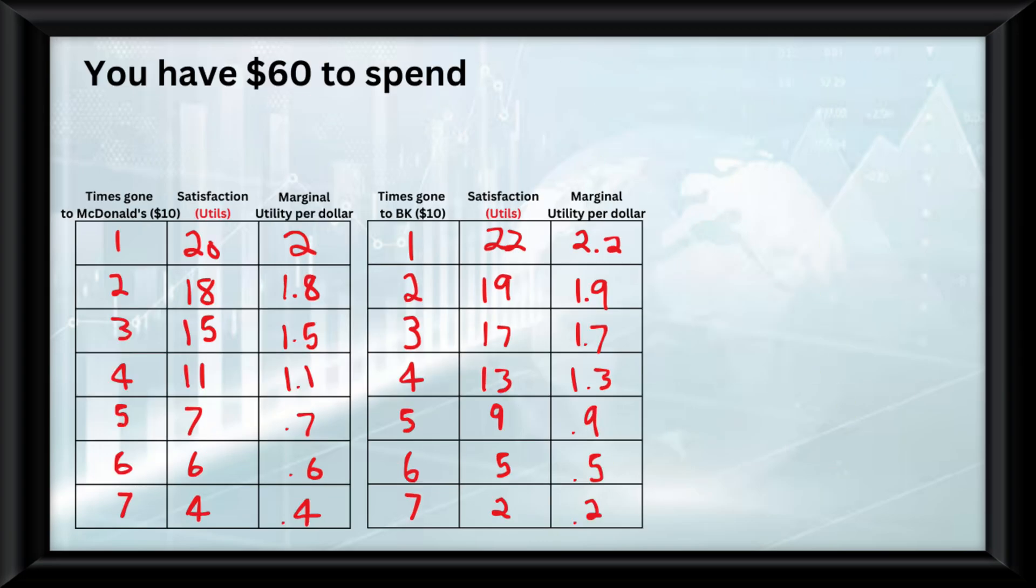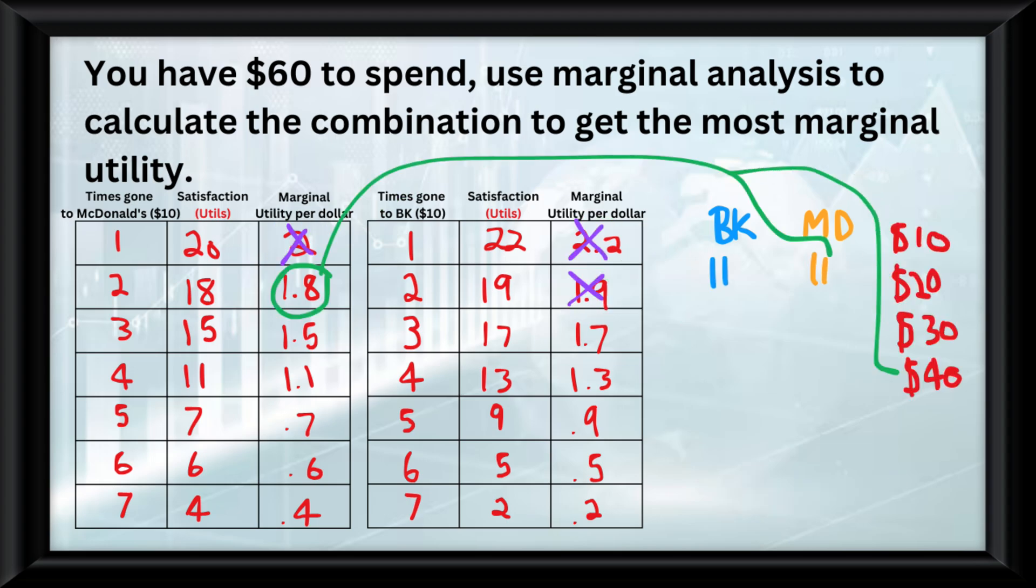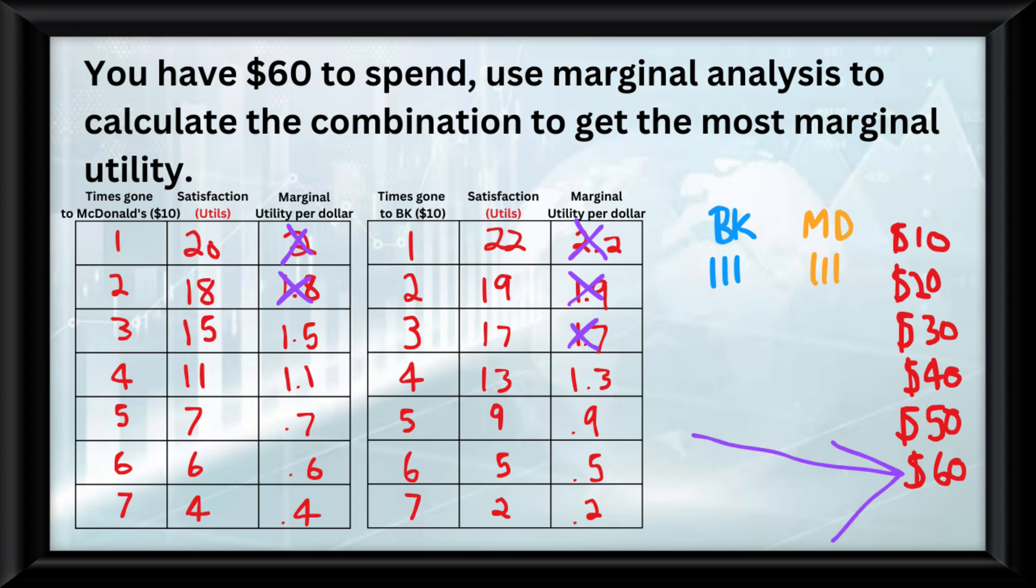Now say we only have sixty dollars to spend, and it was asking us to use marginal analysis to calculate the combination of the amount of times I should do both things. The way to do this is to keep picking whichever one has the highest marginal utility per dollar until you reach the dollar amount, which in this case is sixty dollars. And it's that simple.